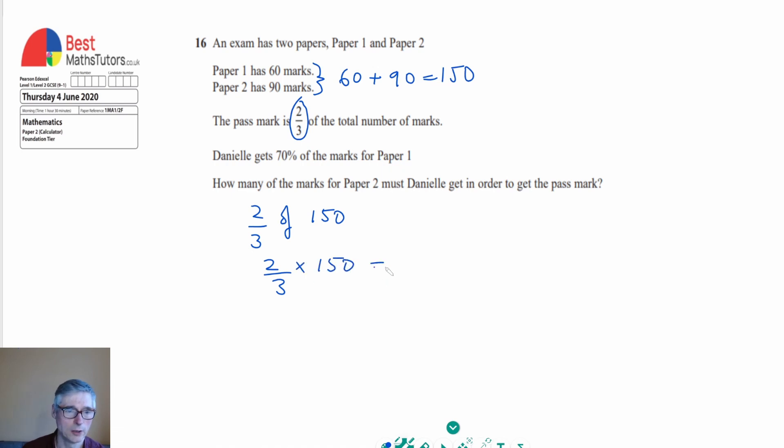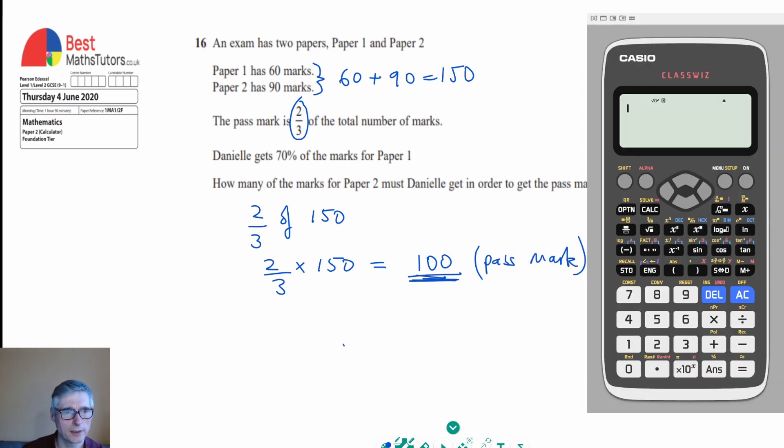And to do that, we can divide the 150 by 3 and then times the result by 2. So if I divide 150 by 3, I will get 50. And then if I times it by 2, I will get 100. So really what that's telling me is the pass mark is 100.